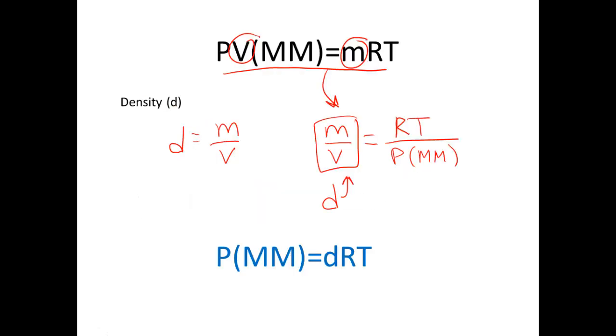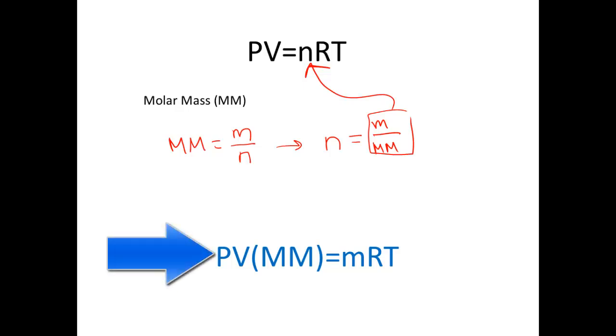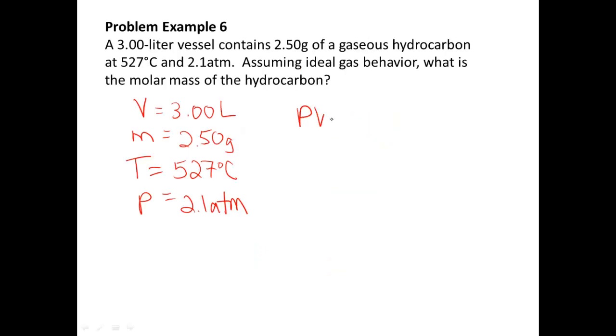So, right, we're going to be using the first one that we learned today. So, if we go back, PV MM equals mRT. That is what we are going to be using in this problem.